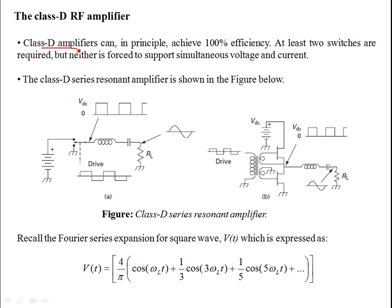In Class D amplifiers we can achieve 100% efficiency. If you employ an active element like a JFET, as we considered earlier for the Class C amplifier, the JFET when used as a switch in the saturation region has a very small on-resistance R. If R is much less than the load resistance RL, then in principle the efficiency of a Class D amplifier can be 100 percent.